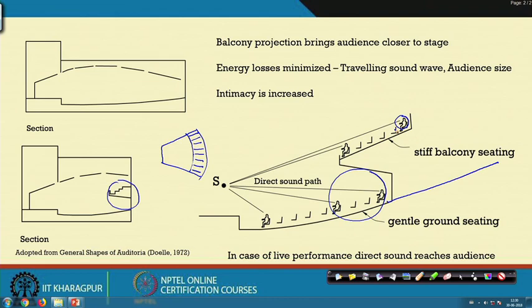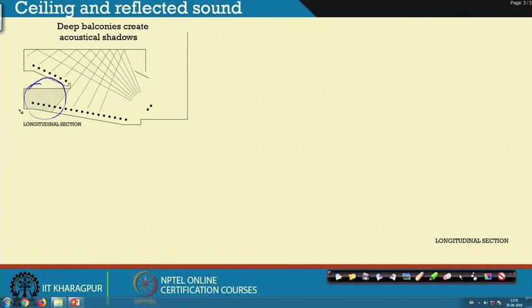We see how ceilings can help. If we have a flat ceiling, the sound — whether from a sitting or standing source — gets directly reflected and falls into the audience area. The balcony is getting a lot of deflected sound, but this part of the seating beneath it is receiving less sound and is under a sound shadow area.